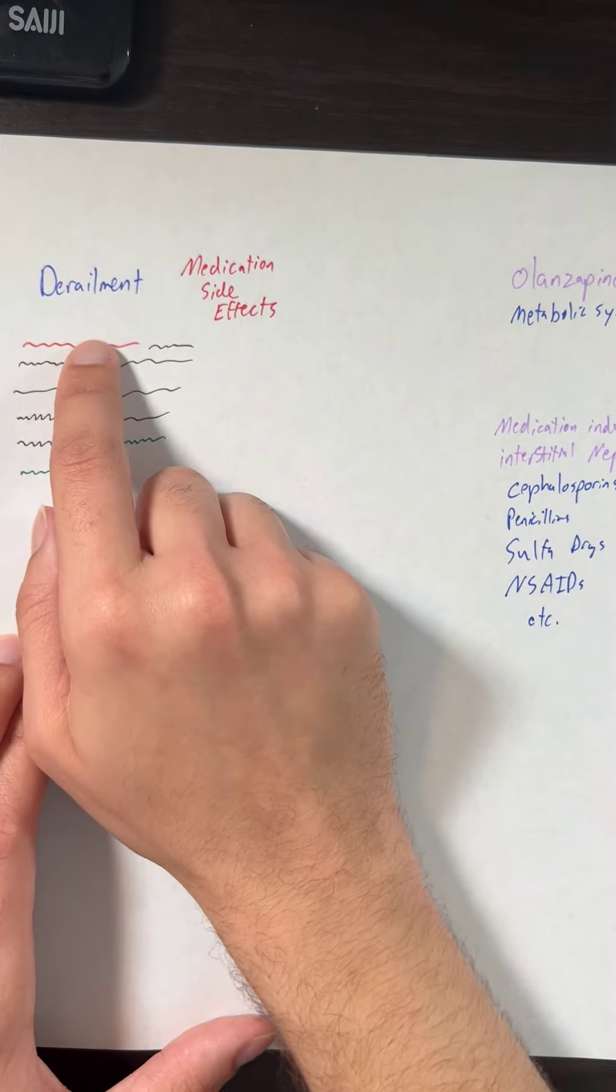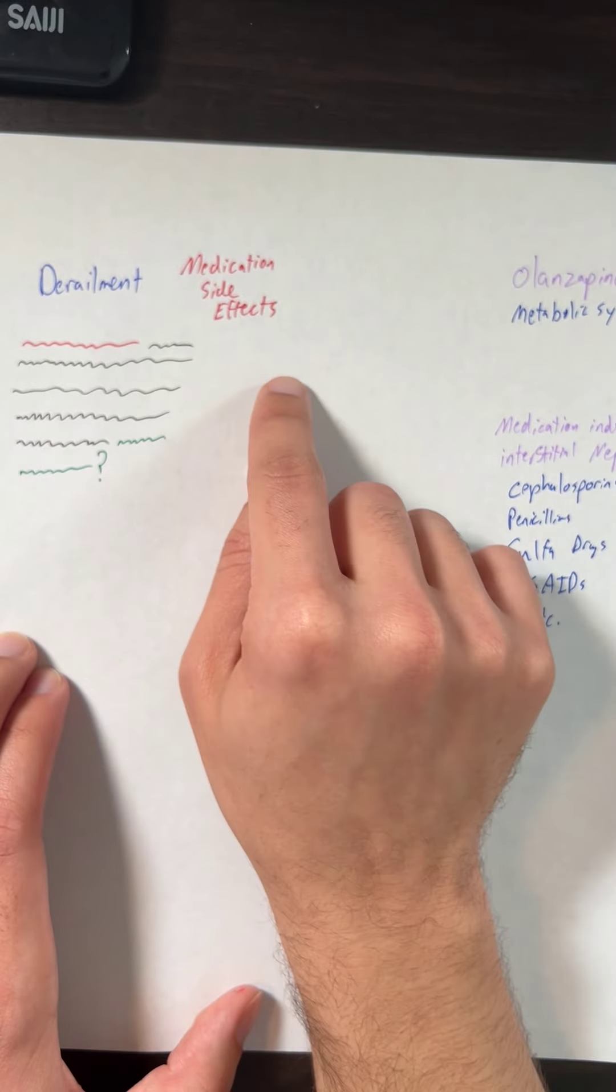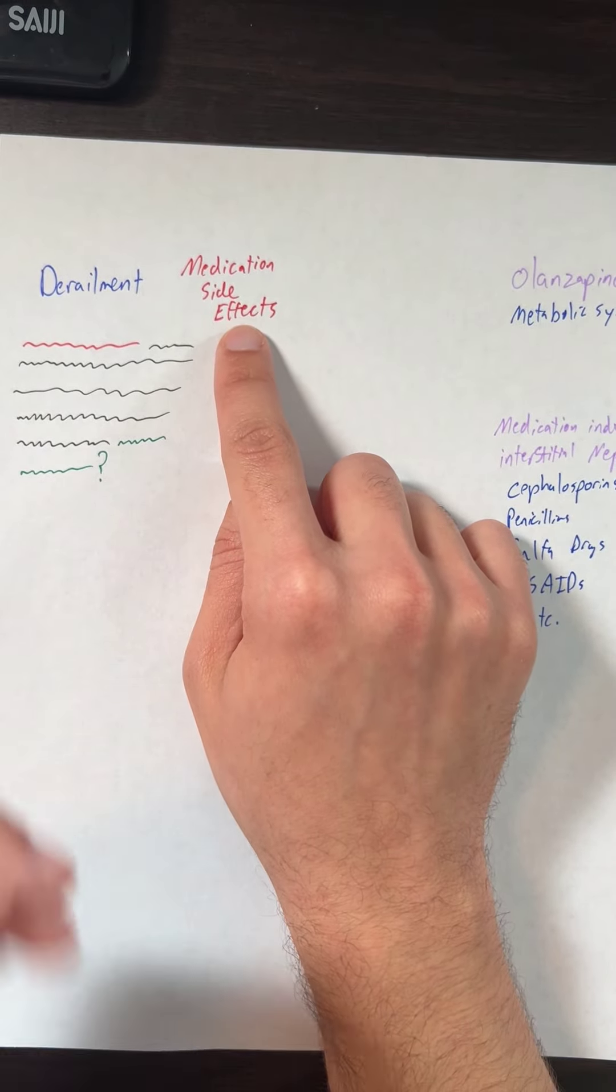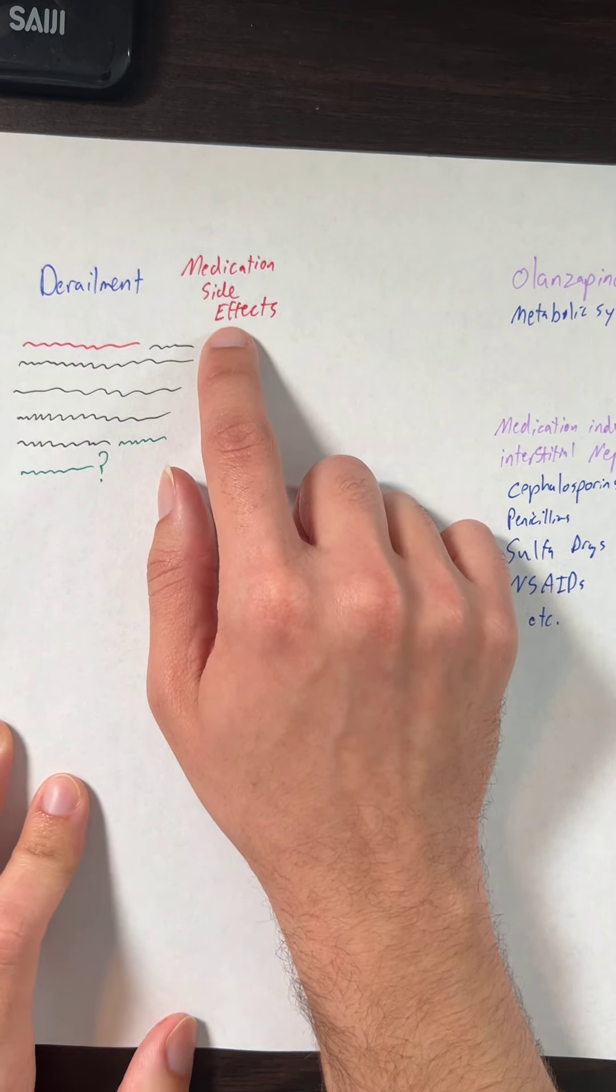Next up we have the derailment thought process. The way I like to conceptualize this is using medication side effects as a prototypical example of how question writers like to go after this concept.